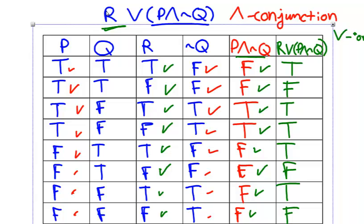So this final column here represents our solution. We have true, false, true, true, true, false, true, false. So right here, this column represents my solution, and I have completed the truth table. Thank you so much for watching.